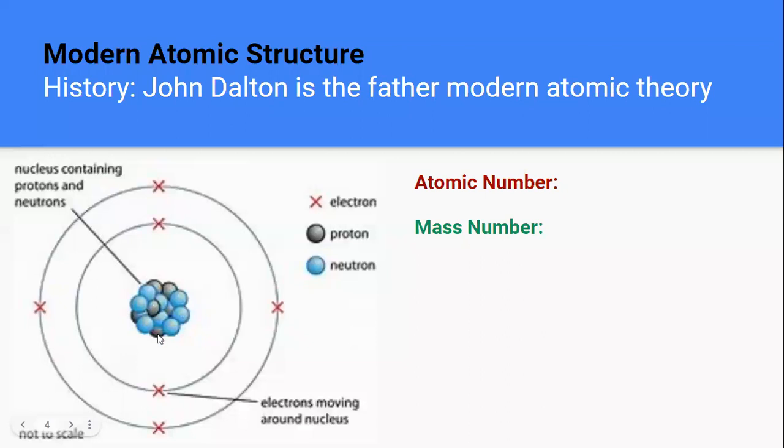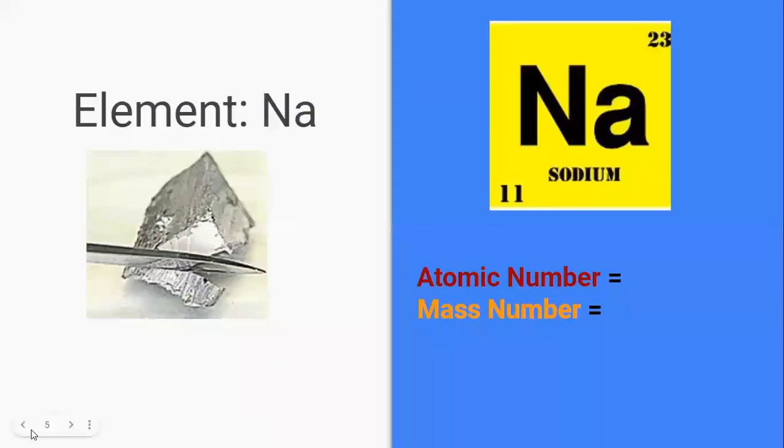So nucleus in the middle, nucleus containing proton and neutron. What else? Outside we have electron. What is this circle? This circle is what we call orbital. So we got one orbital, we got two orbitals. And then the terms that I want you to get familiar with this week is what we call the atomic number.